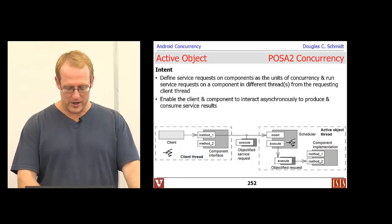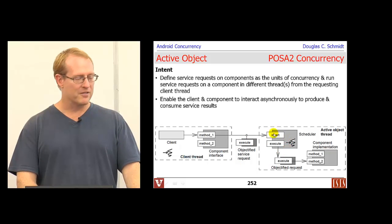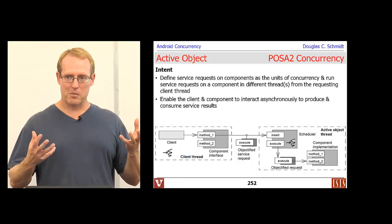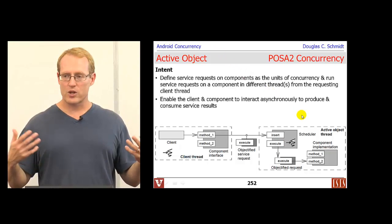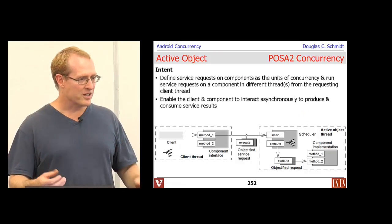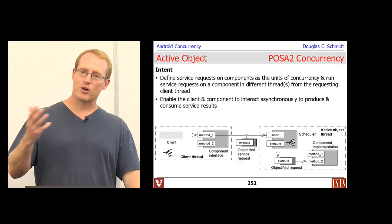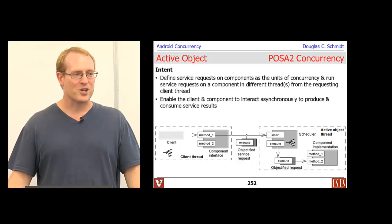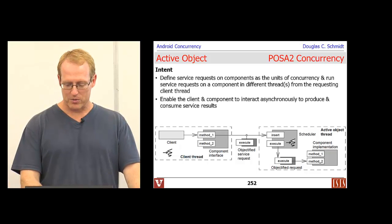In a nutshell, we have a client with a client thread invoking some method on some interface, and some magic happens. The method call gets turned into a so-called objectified service request — a linearization of the parameters and information that corresponds to the method call. That thing gets stuck into an activation list or queue managed by the active object, which runs in a separate thread or threads of control. A scheduler takes the request out of the queue and invokes an operation back on a servant, which is the implementer or executor of the original invocation.